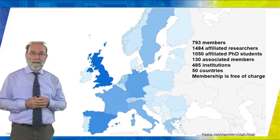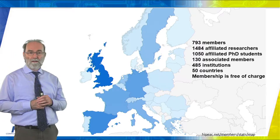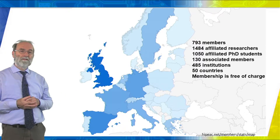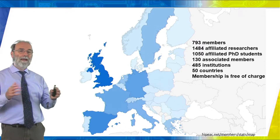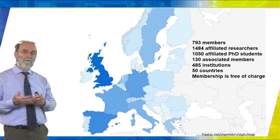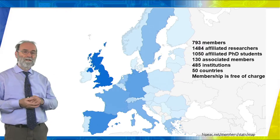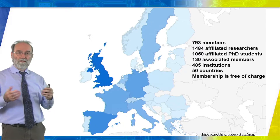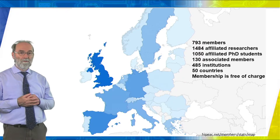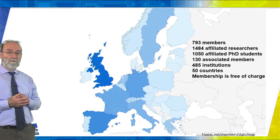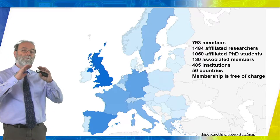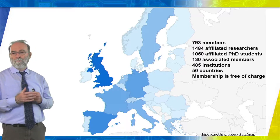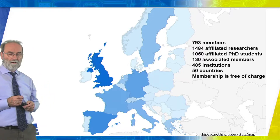How big are we? We currently have around 800 members accepted by the steering committee of HiPeak. They can also affiliate their colleagues and students, and if we add all affiliate and official members together, we have a network of around 2,500 people — all experts in computing systems, based mostly in the European Union. This covers almost 500 institutions in 50 countries, going a little beyond the EU 27, though the majority of members are from within the Union.